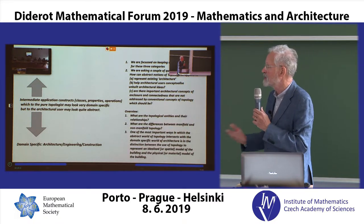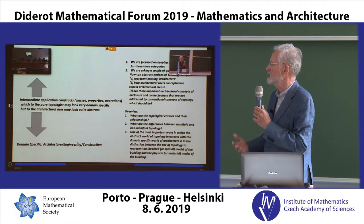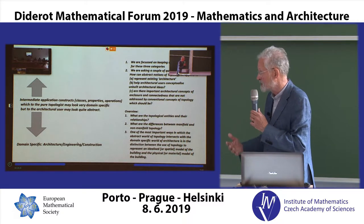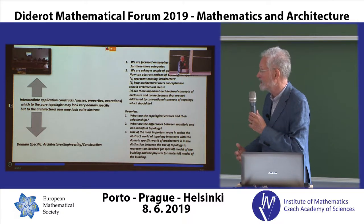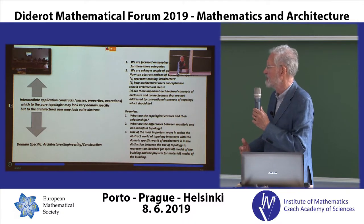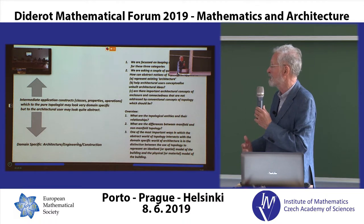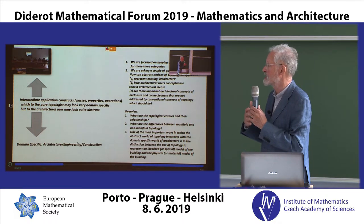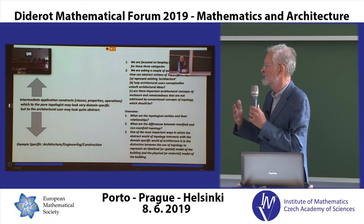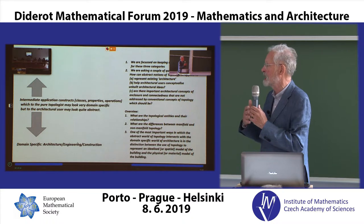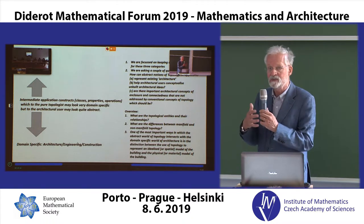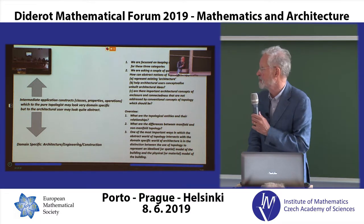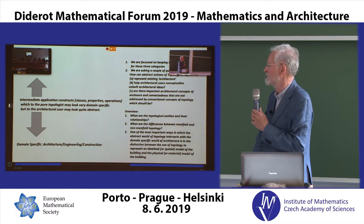We're going to give a very short overview of topology, talk about the difference between manifold and non-manifold topology, and how we can essentially use this to separate the world of architecture into an idealized or spatial model of architecture and a material or physical model.